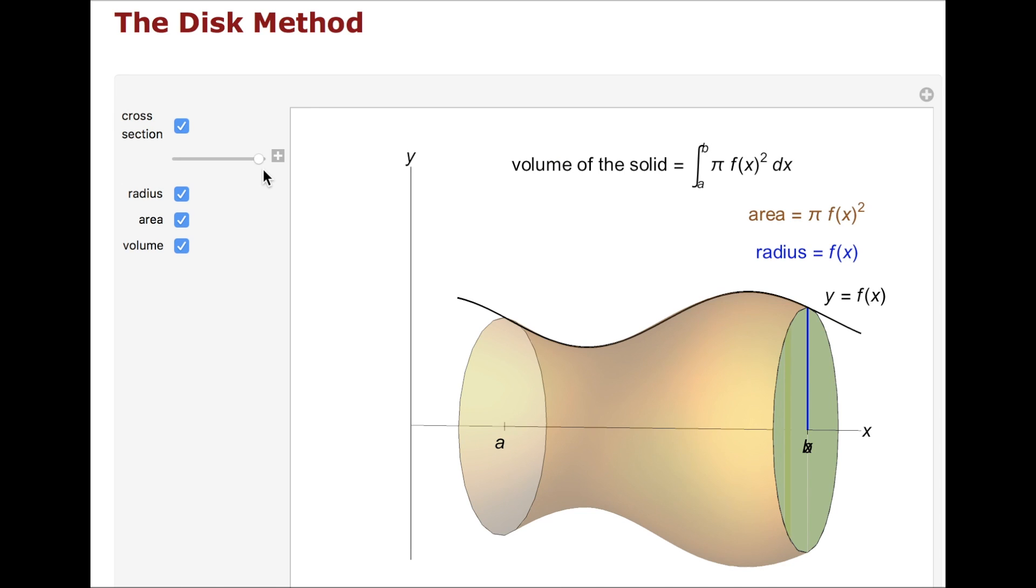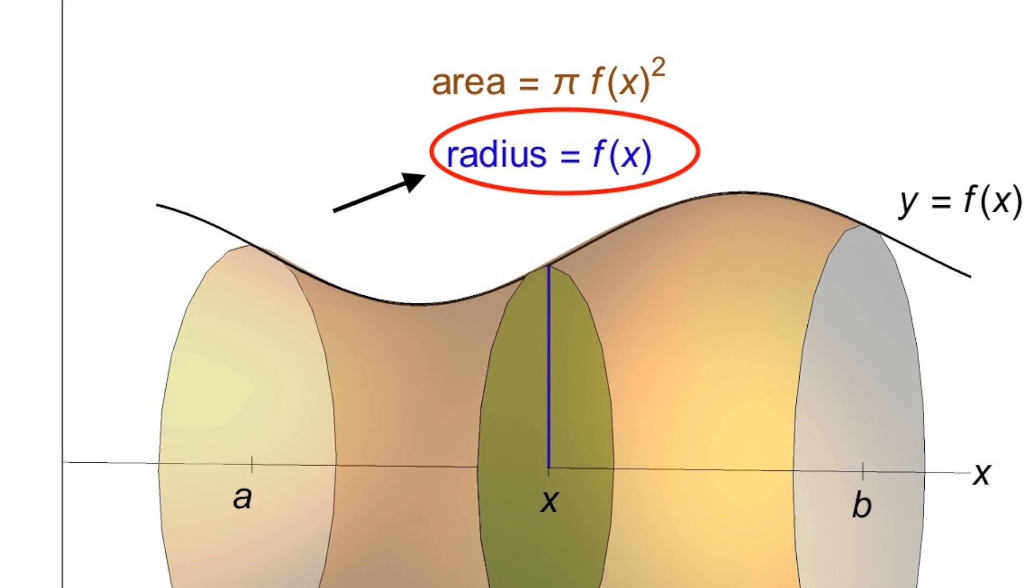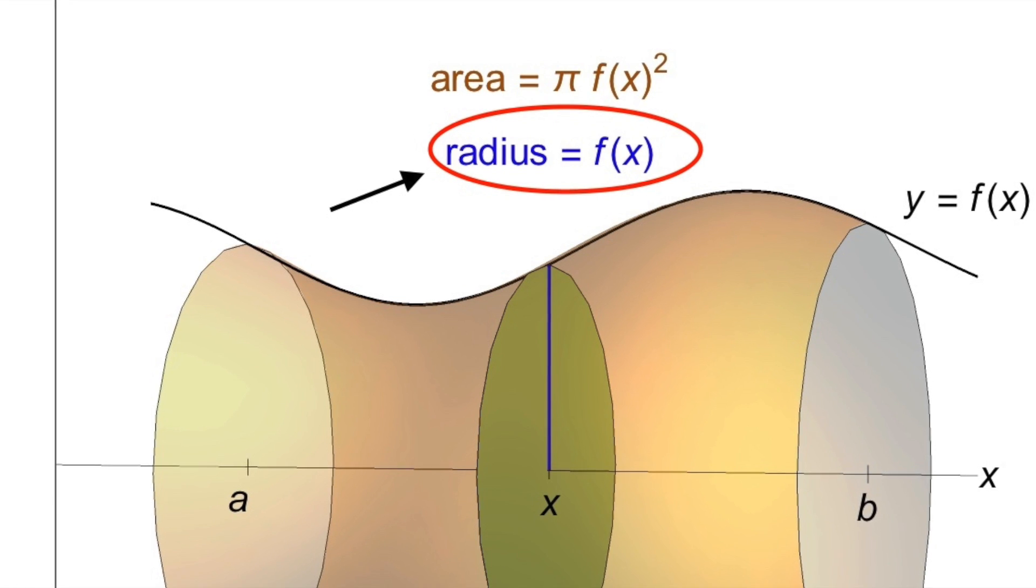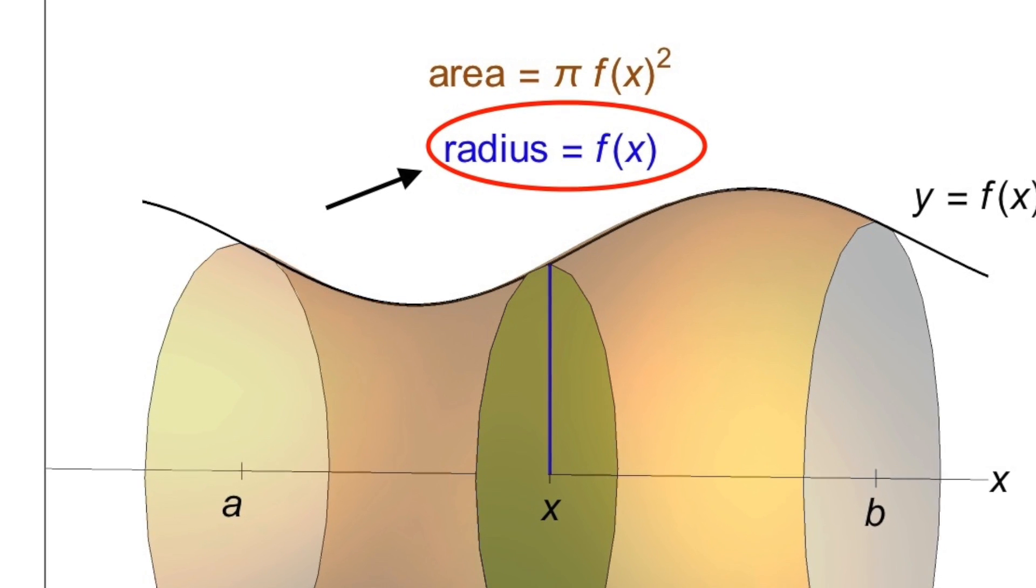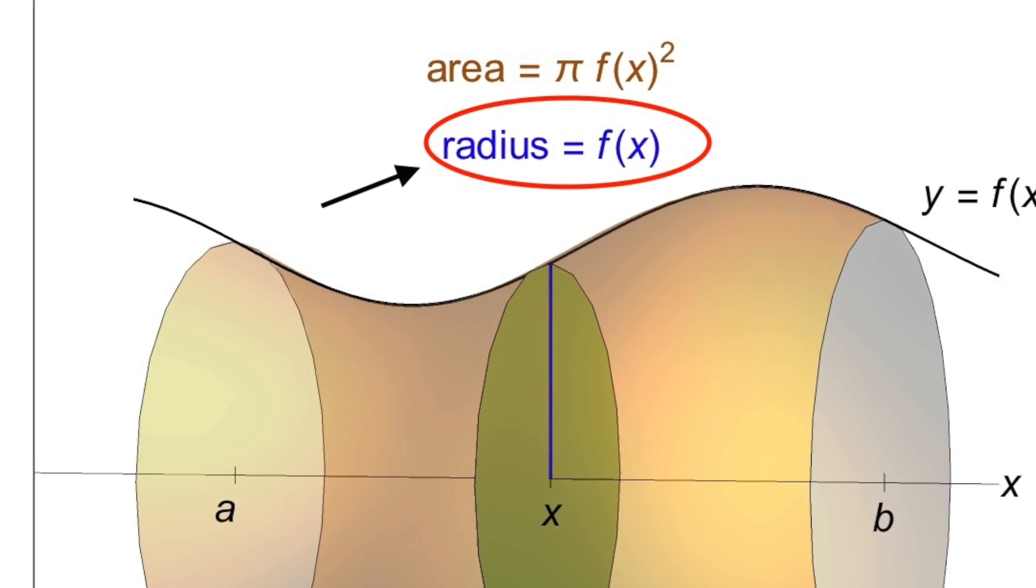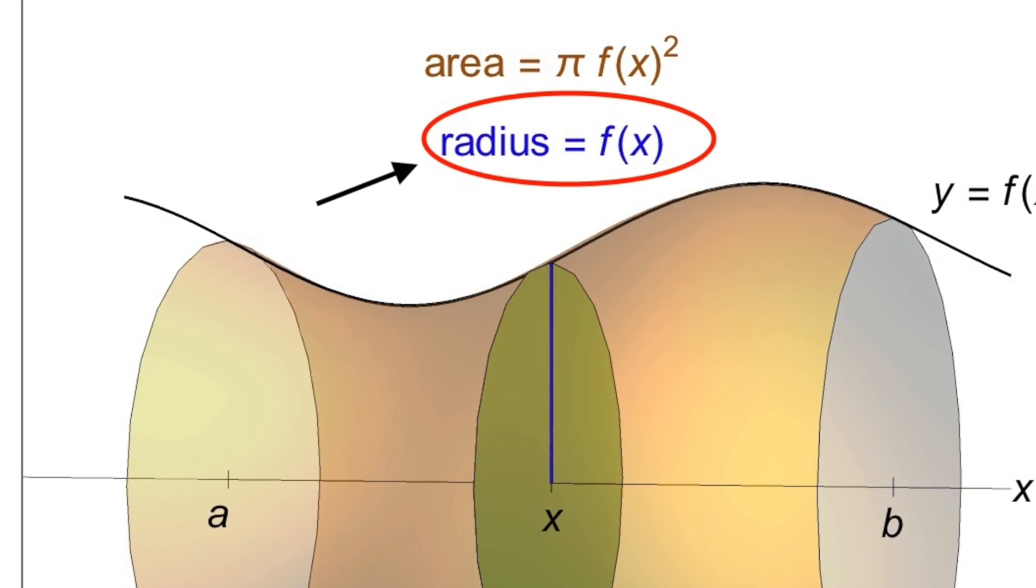For the disk method, given we have a function y equals f(x), our radius or representative rectangle is the distance of f(x), or the curve, from its axis of rotation, either it's going to be x or y.